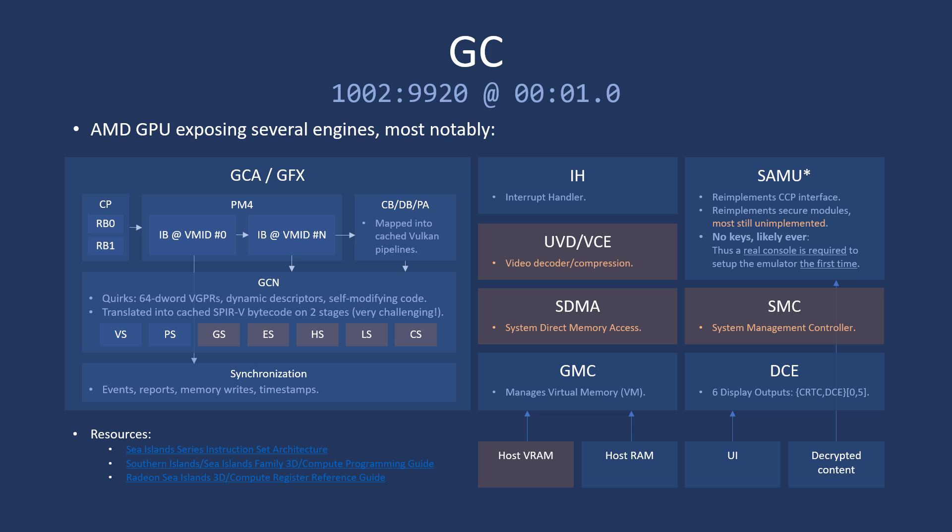Below graphics, there is an interrupt handler through which other engines fire MSI interrupts. The video decoder and compression engines are entirely ignored for now, and SDMA is also unimplemented. GMC manages the virtual memory — the VMIDs — mapping a virtual address space of one VMID into host RAM. It cannot access host VRAM, which is managed by the Vulkan backend and is terribly inefficient, so we're going to work on that. Then there is SAMU, the Secure Asset Management Unit, which works by re-implementing the CCP — Cryptographic Coprocessor — interface, and also re-implements secure modules via kernel driver reverse engineering.